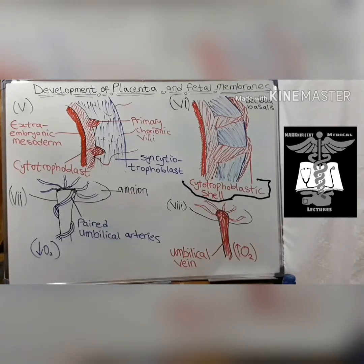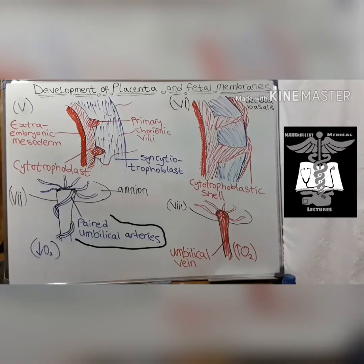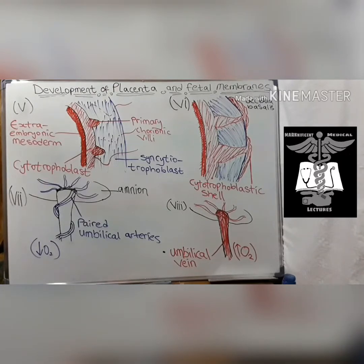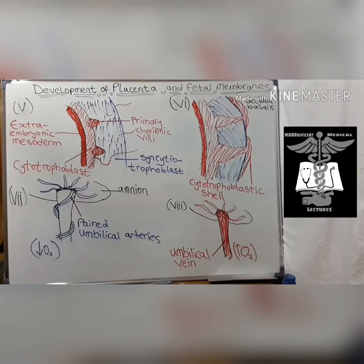At week 4, fetal blood flow is established, where deoxygenated blood is carried to the placenta by the umbilical arteries, while oxygenated blood travels back to the fetus through the umbilical vein. The placenta nourishes the fetus during development and is delivered shortly after parturition.